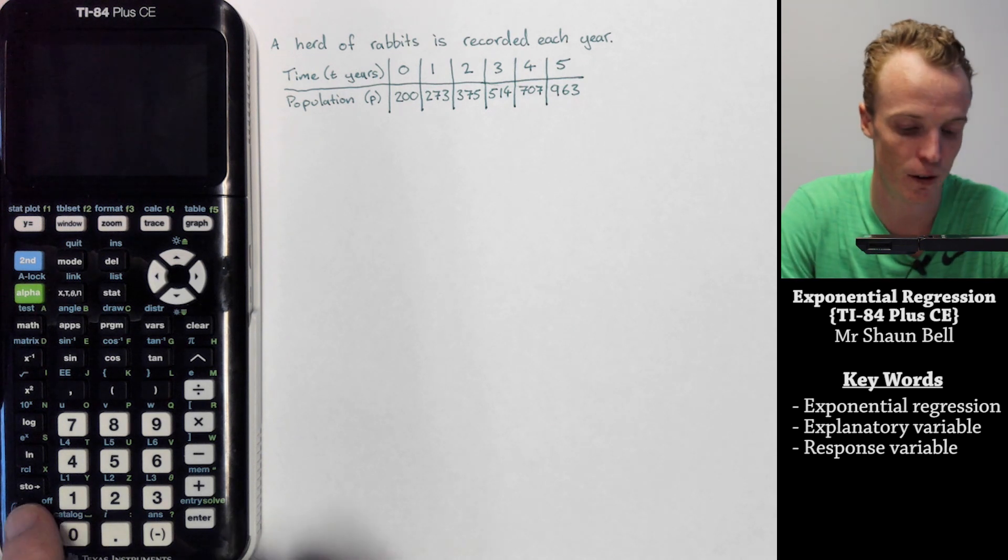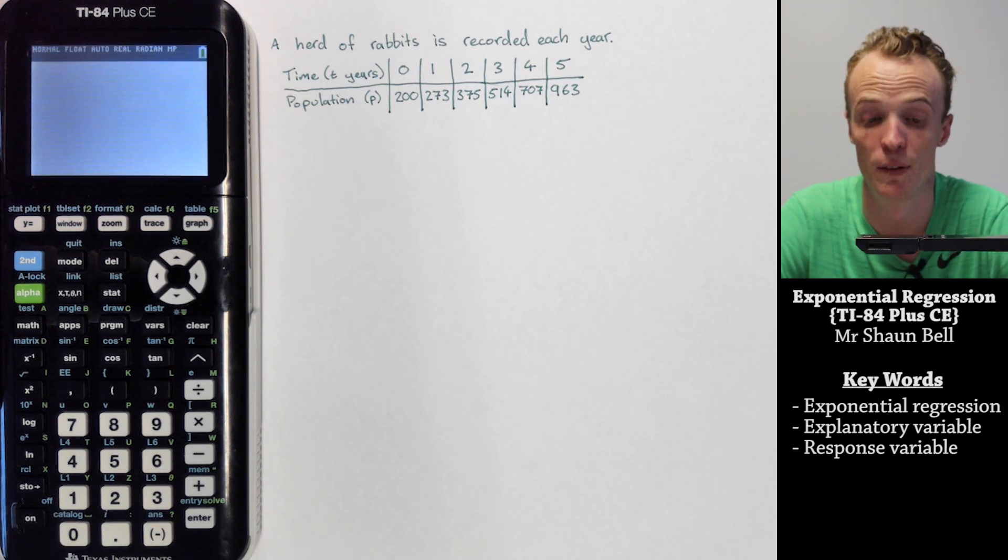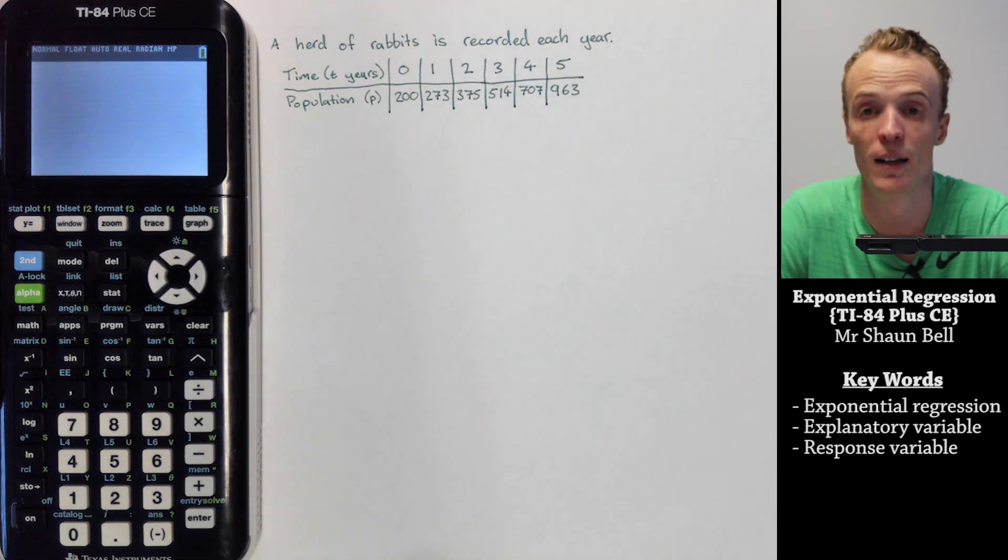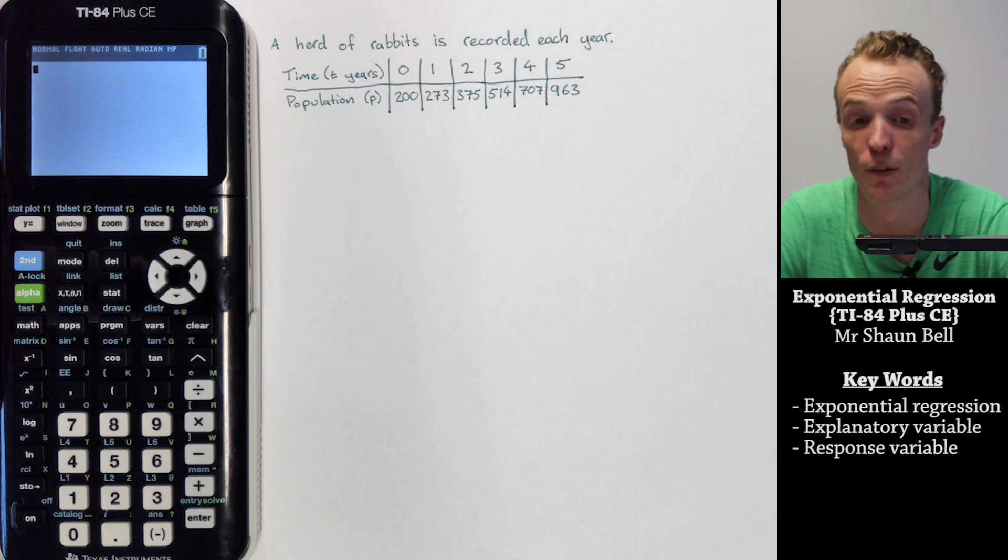The first thing I'm going to show you is how to input these sets of values as lists. To do this we'll first need to identify which one's our response variable and which one's our explanatory variable.